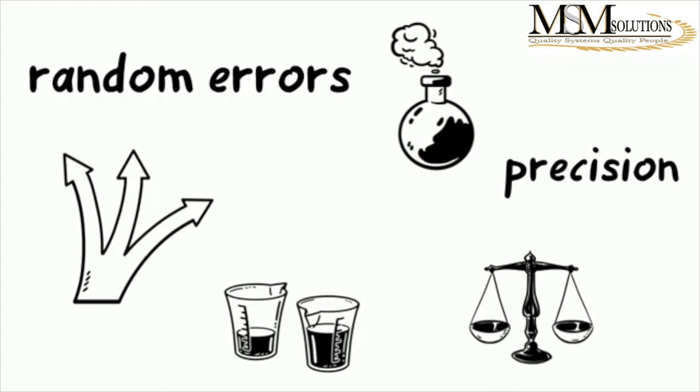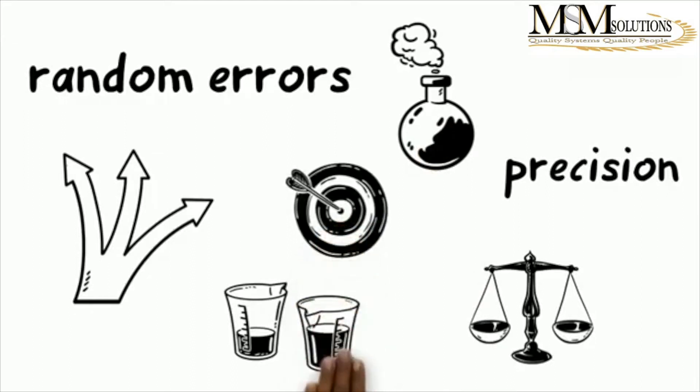And different things such as that sometimes happen, but you cannot necessarily pinpoint exactly what happened. But that results in variation from what your true value should be.